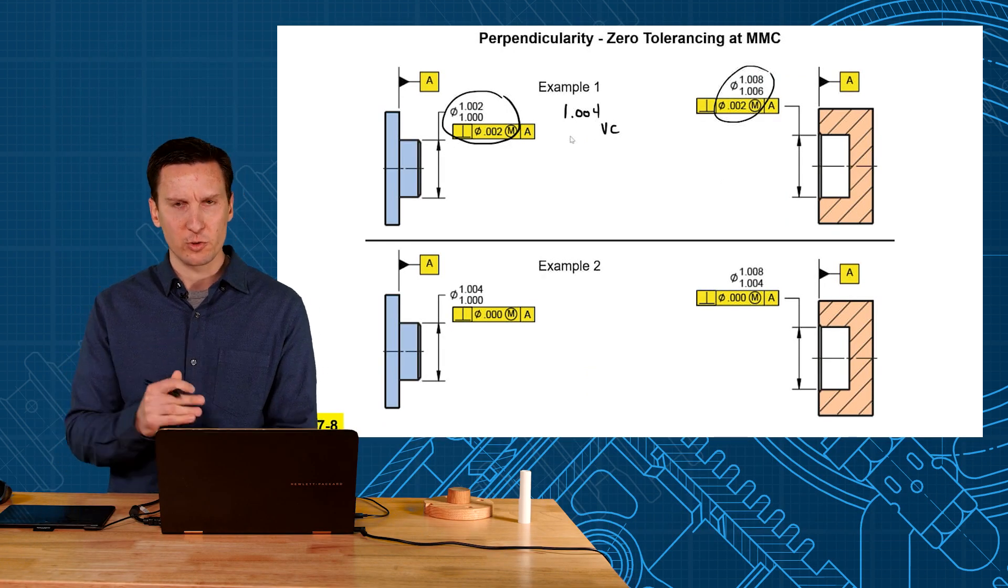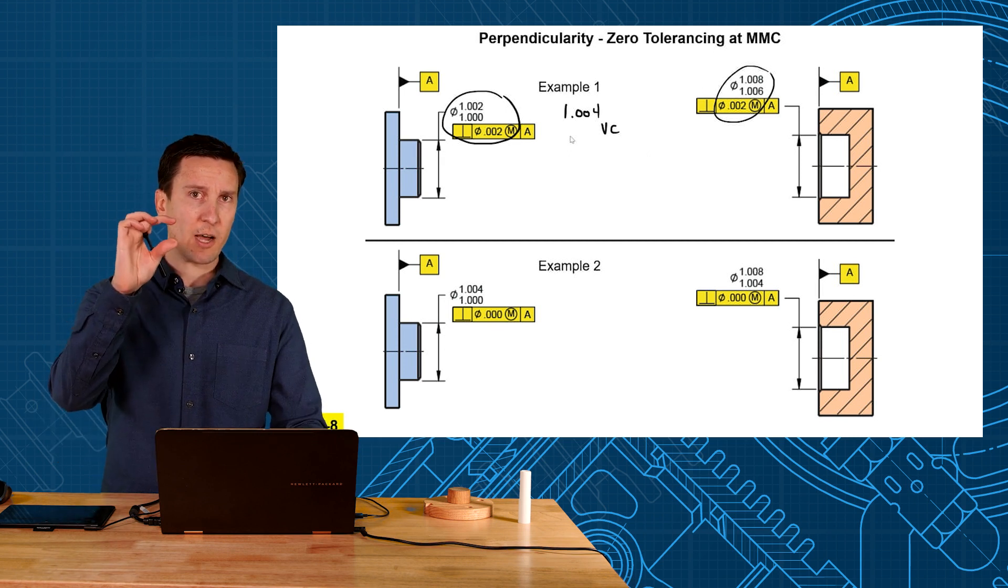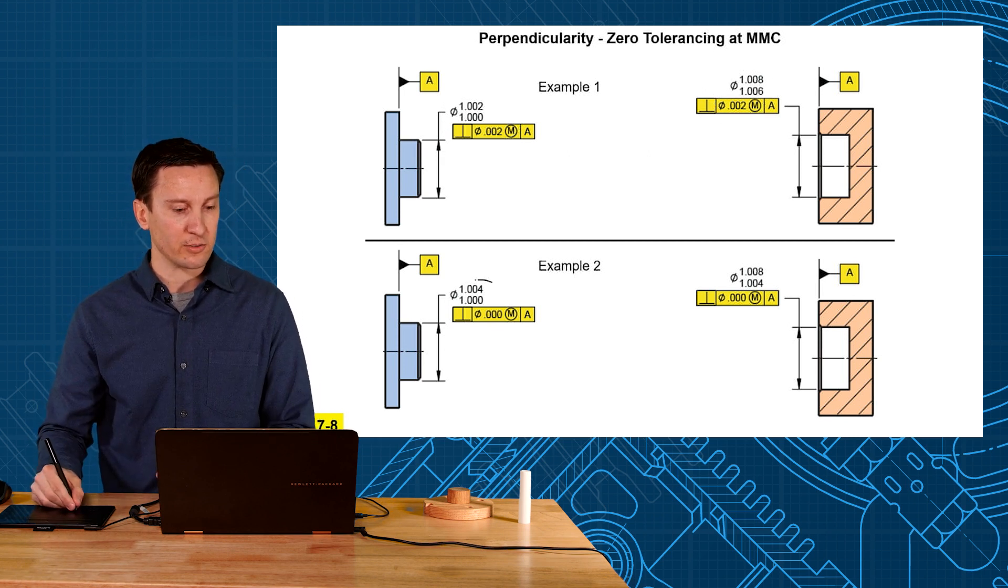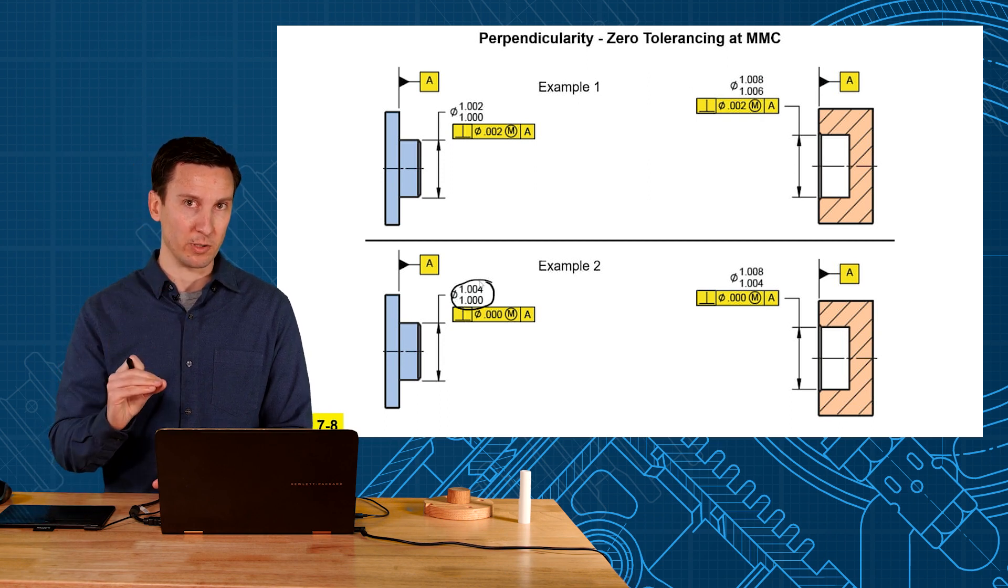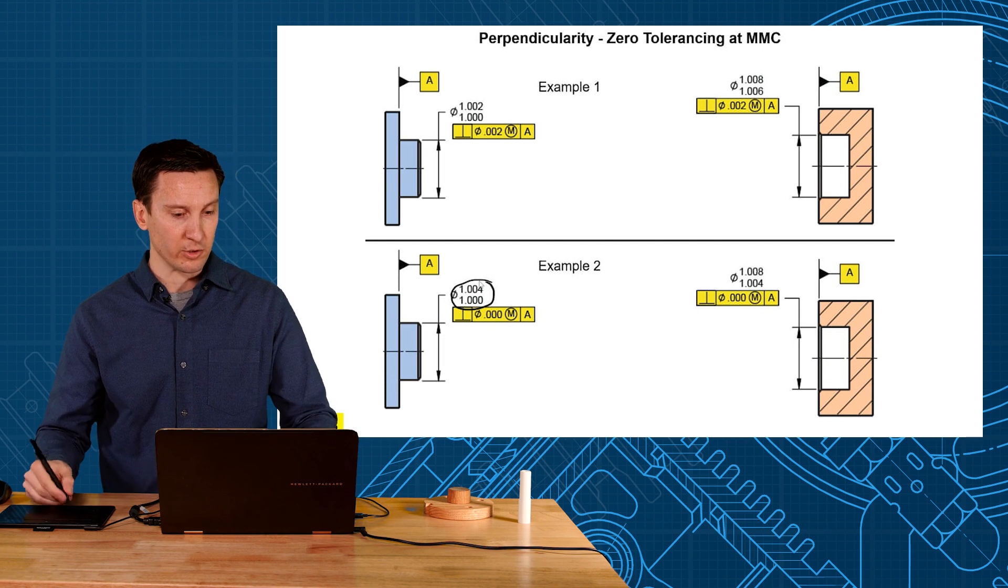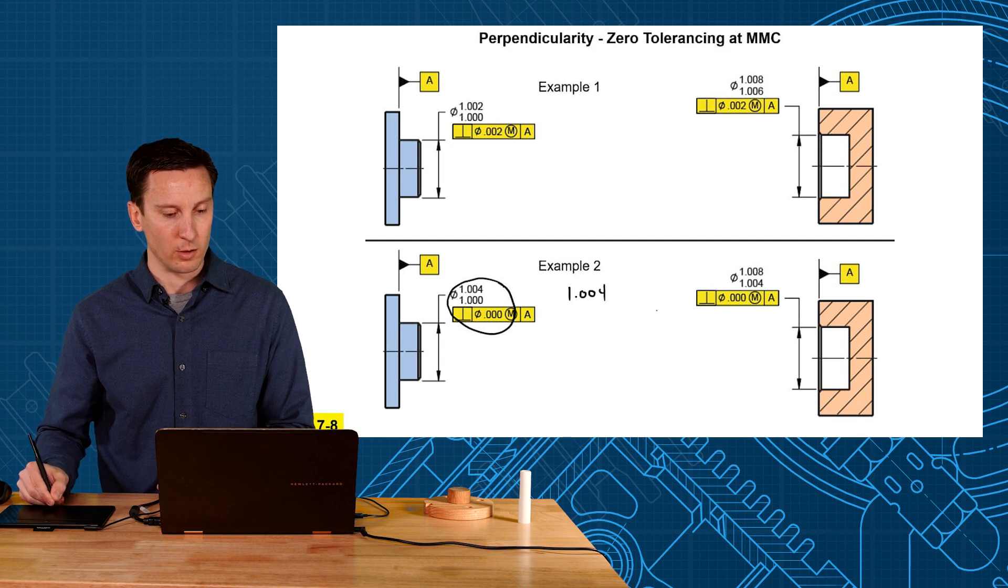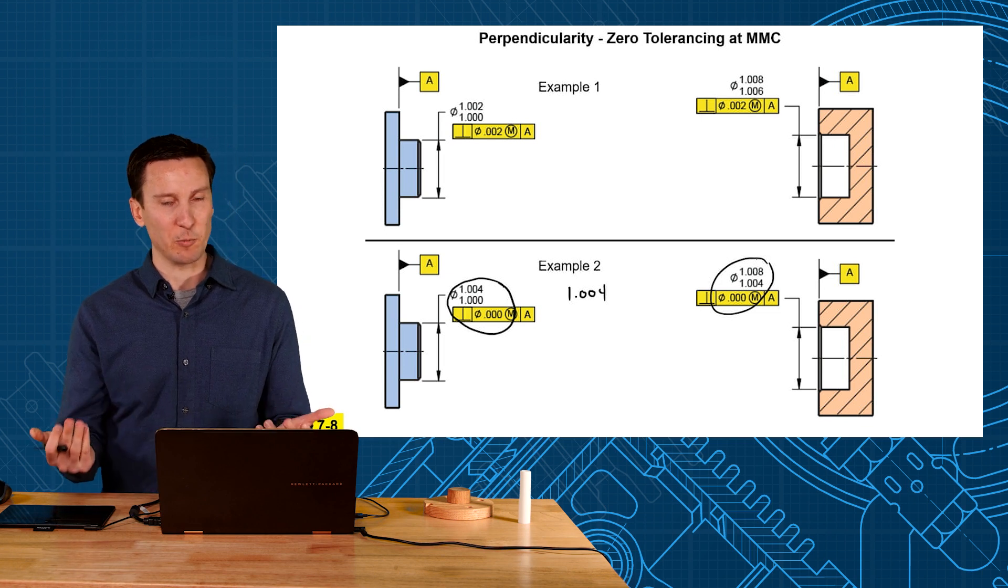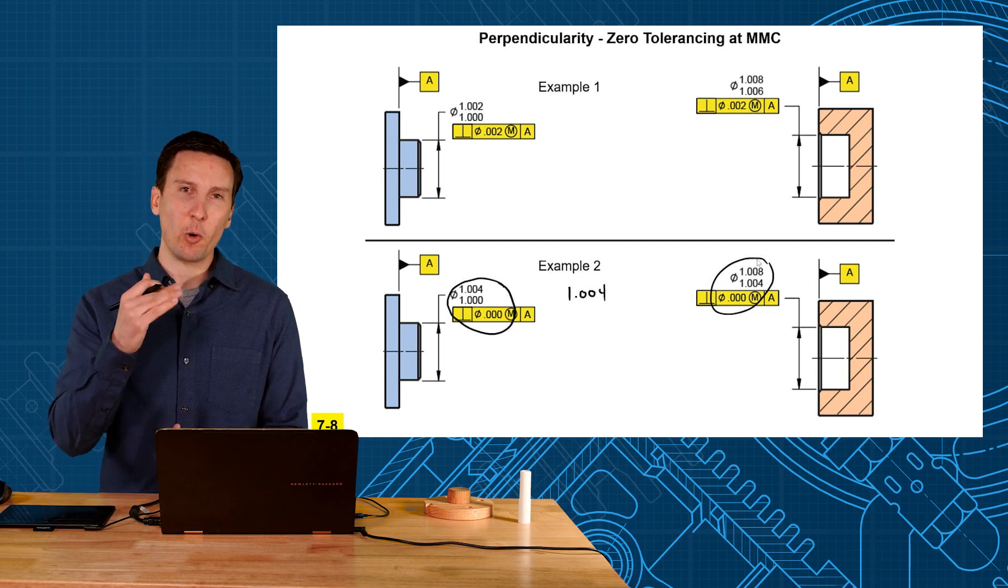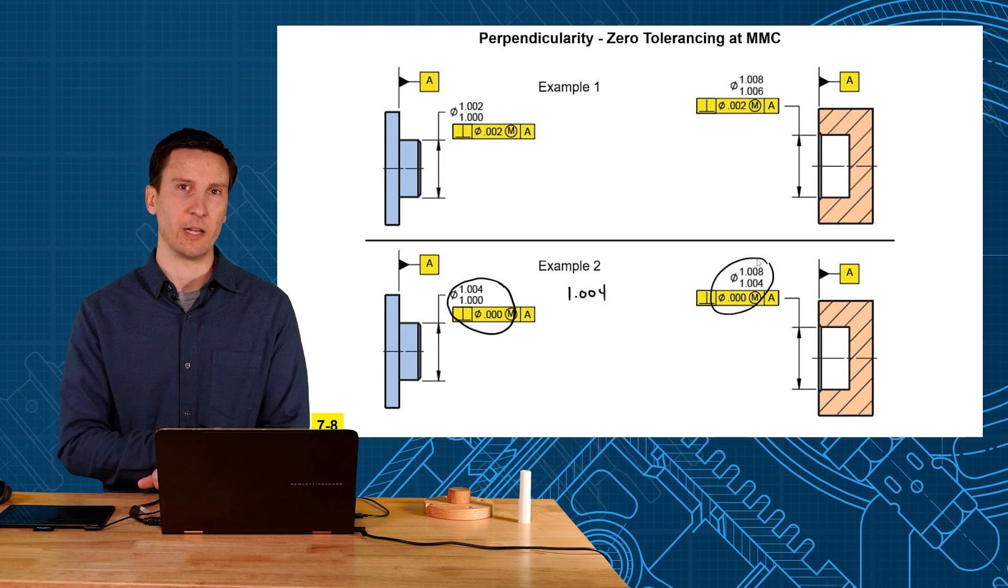Now example two tolerance is a little different though. Instead of sizing it two thou for size and two thou for perpendicularity, it adjusts the size tolerance to give four thousand size and zero perpendicularity. Okay, so let's look at the virtual conditions. What's the virtual condition of the pin? Biggest pin plus, that'd be one inch four. What's the virtual condition of the hole? Smallest hole minus, that'd be one inch four. So both of these parts will fit together with worst case clearance of zero, line to line fit at their worst case.